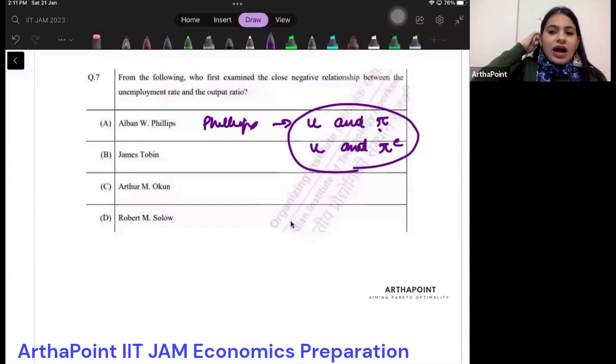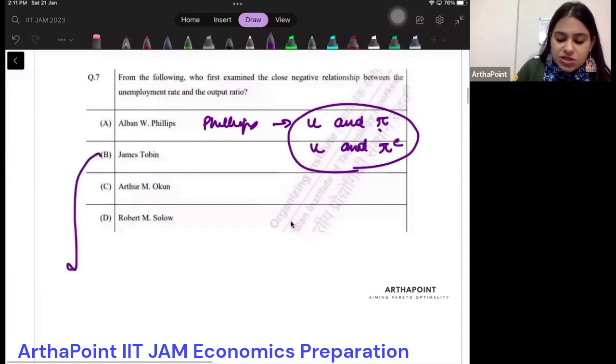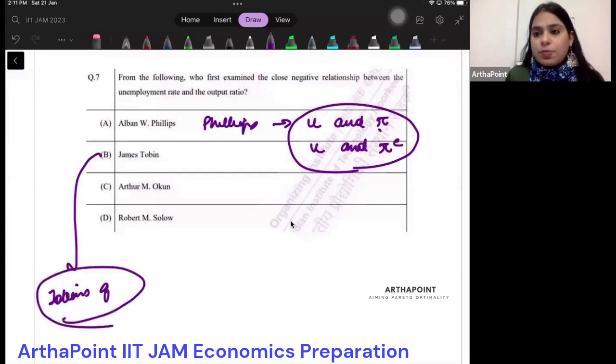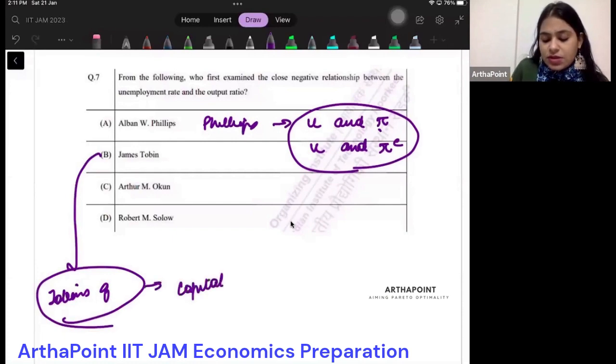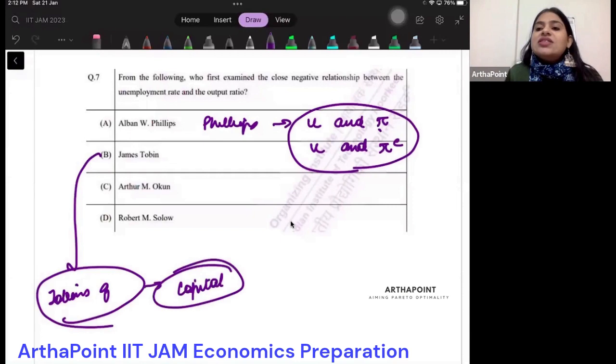When I talk about Tobin, the best thing you can link Tobin to is Tobin's queue. We did a question on this in our mock paper also. Tobin's queue you can link to capital - what is the desired amount of capital and what's the actual amount of capital.